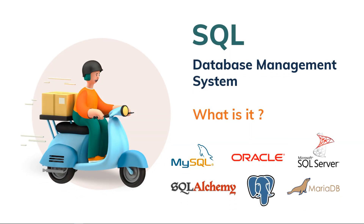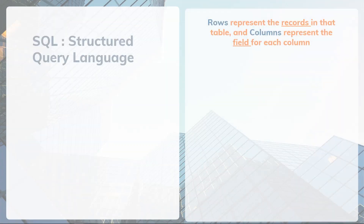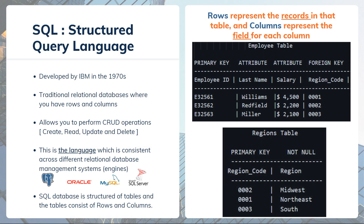First off, let's see what is a SQL database management system. SQL is named for the language it's written in — it stands for Structured Query Language. It was developed by IBM in the 1970s. This is the traditional relational database where you have tables that consist of rows and columns, also called records and fields. Rows, records, and tuples are three synonyms, and column, field, and attribute also mean the same thing.